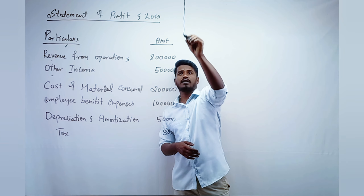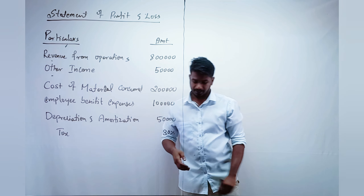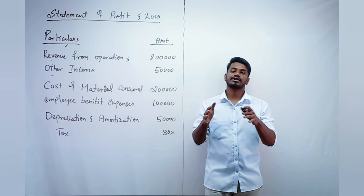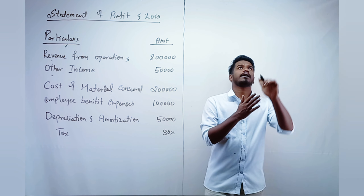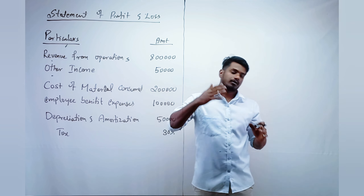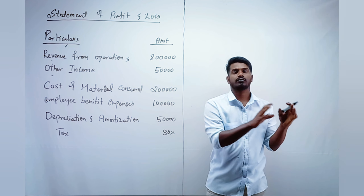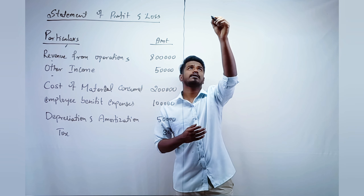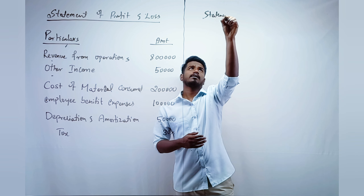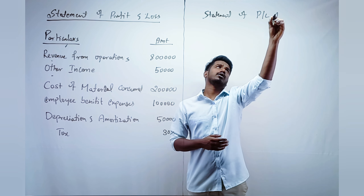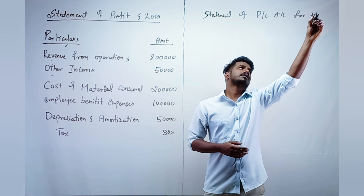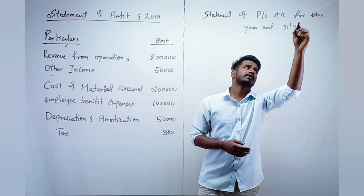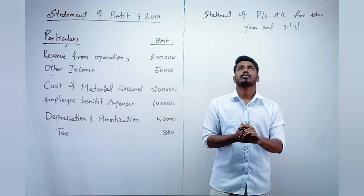If you get this question in the exam, you can blindly get almost 6 marks easily. So let us solve this question. First, write the heading: Statement of Profit and Loss Account for the year ended 31st March — whatever year they give, you write that.